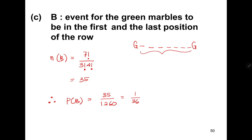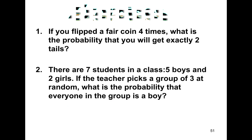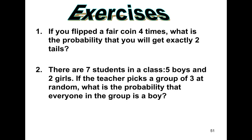For the exercises: number one, if you flip a fair coin four times, what is the probability that you will get exactly two tails? Number two, there are seven students in a class — five boys and two girls. If the teacher picks a group of three at random, what is the probability that everyone in the group is a boy? You may discuss these exercises with your lecturer. Good luck and see you later!